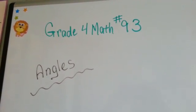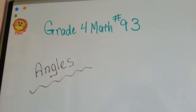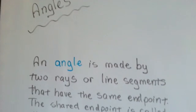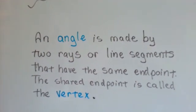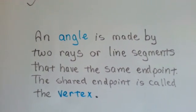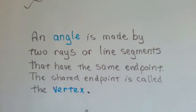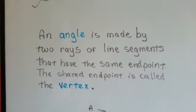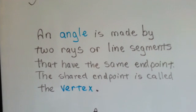Grade 4 math number 93, angles. In our last video, we talked about rays and line segments and lines. Now we're going to talk about angles.